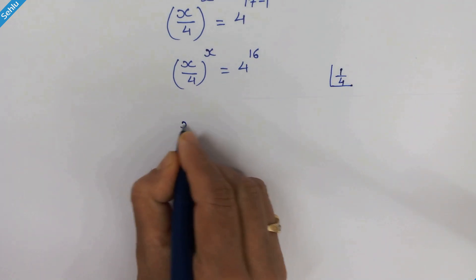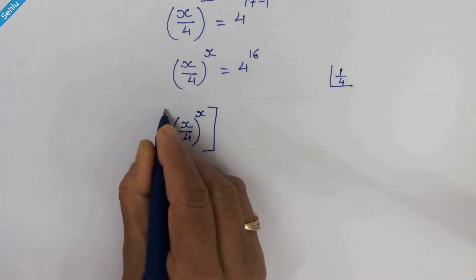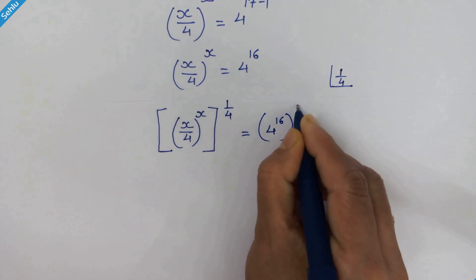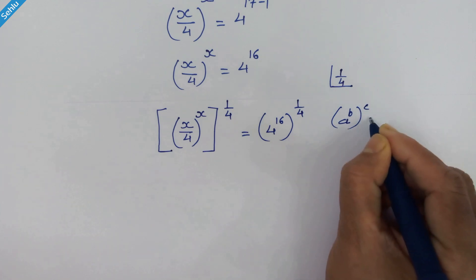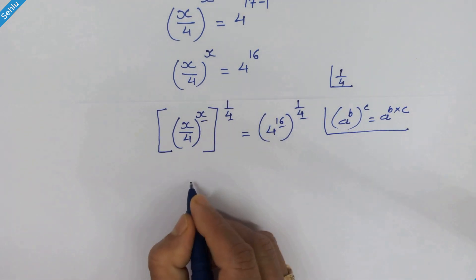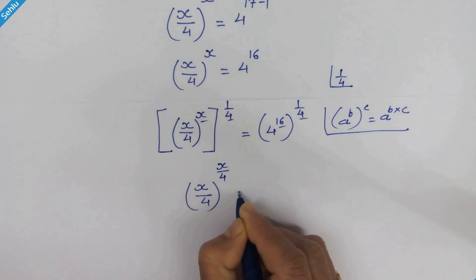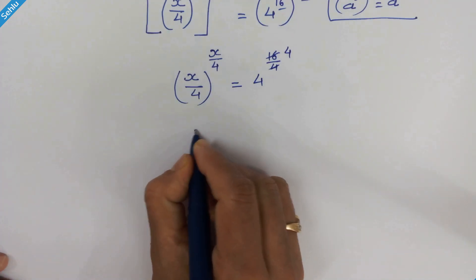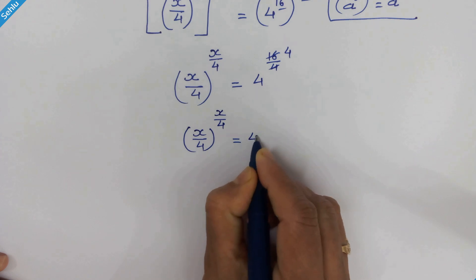Now in the next step we will raise 1 upon 4 at both sides. So x upon 4 whole raised to x, whole raised to 1 upon 4, is equal to 4 raised to 16 whole raised to 1 upon 4. According to this rule, if we have a raised to b whole raised to c, it will be a raised to b times c. So we have x upon 4 whole raised to x upon 4 is equal to 4 raised to 16 upon 4, and 16 divided by 4 is 4, so it becomes 4 raised to 4.